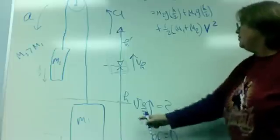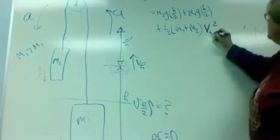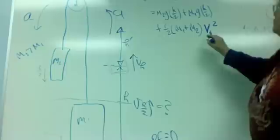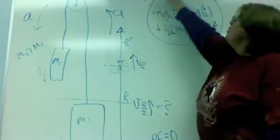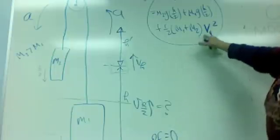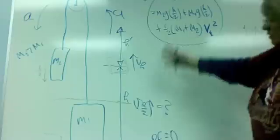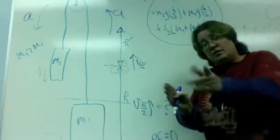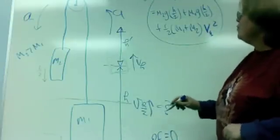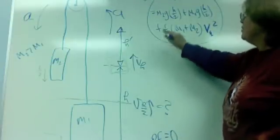I'll call it v with a subscript h over 2. So, if you simply plug in all your numbers, and first solve for v of h over 2, then plug all your numbers in, you'll get started with the first question, answering the first question.